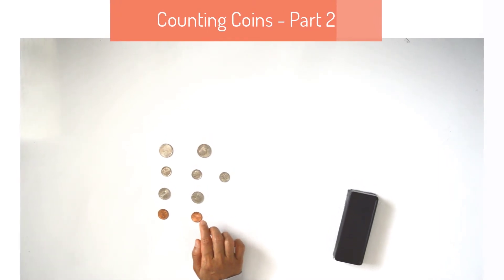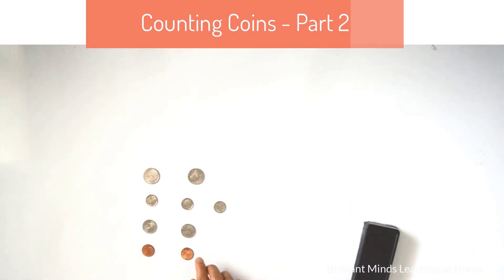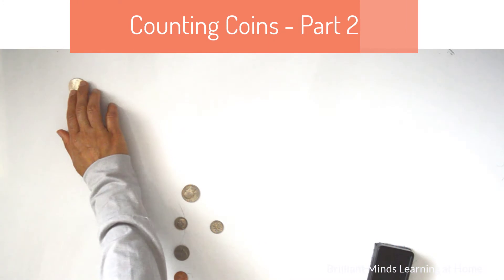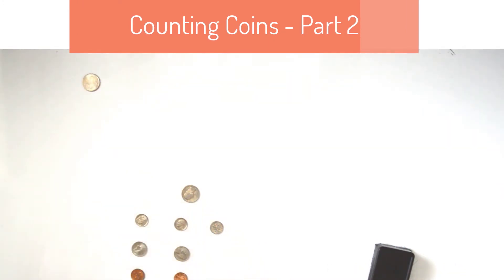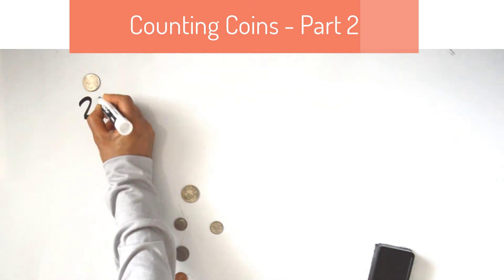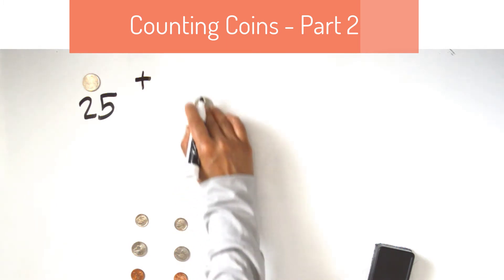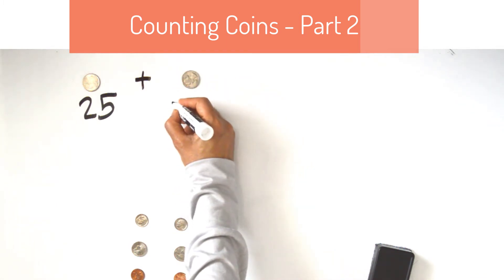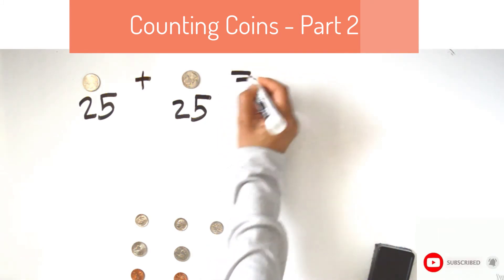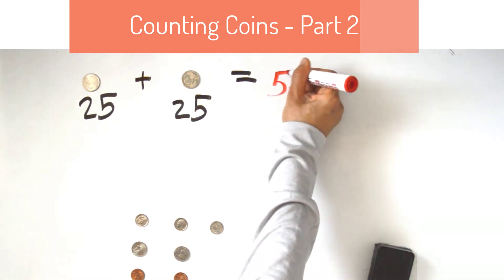Since quarter is worth most, let's start counting our quarters first. Each quarter is worth 25 cents. 25 plus 25 equals 50 cents.